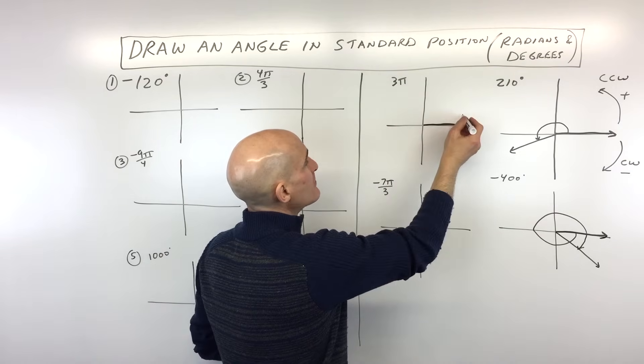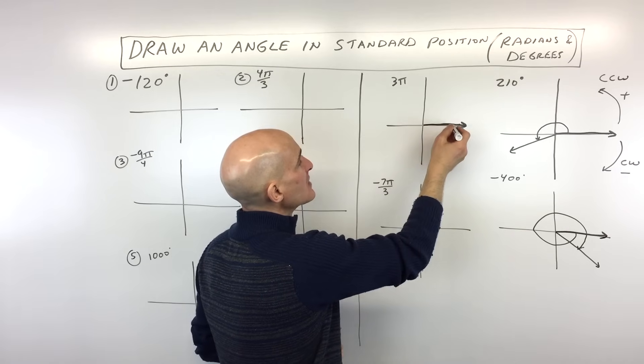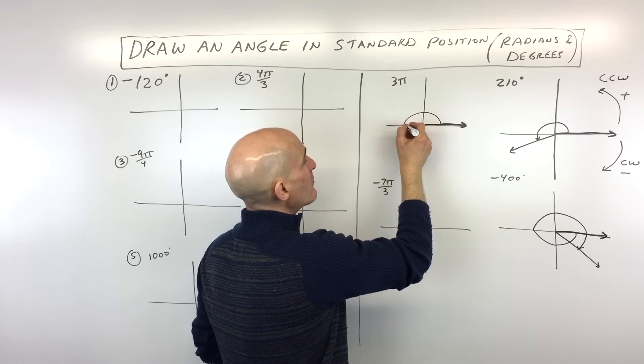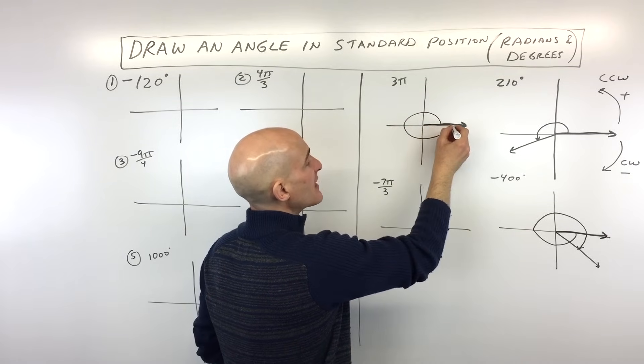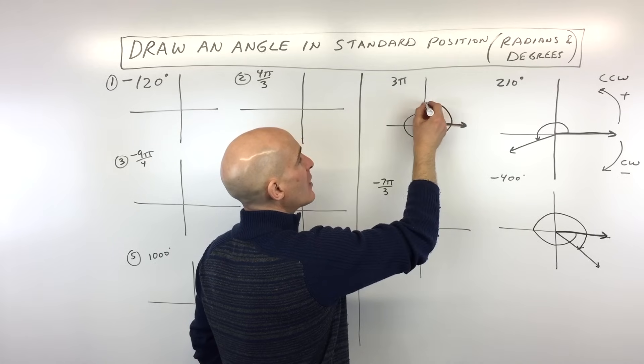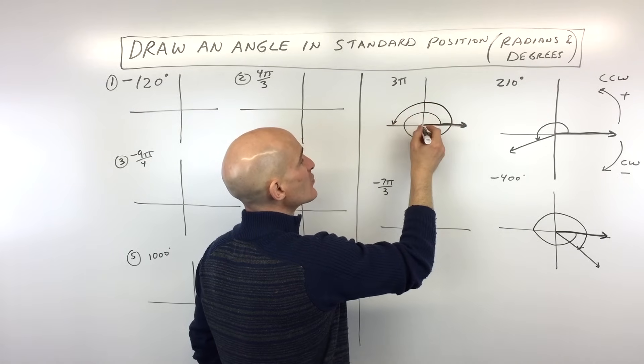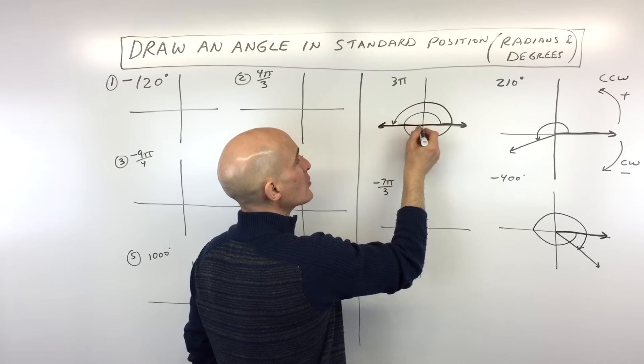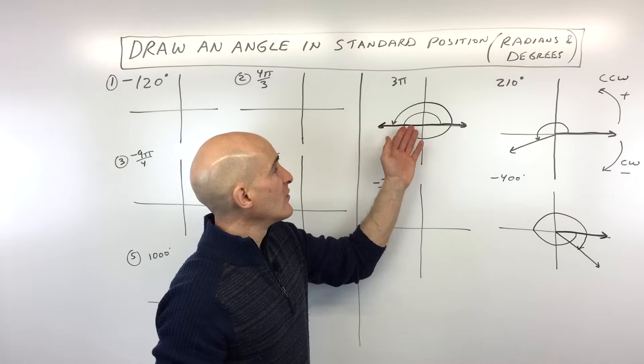So 3 pi, this is positive. So we're going to be heading counterclockwise. 180, that's 1 pi. 360, that's 2 pi. And another 180, that's another pi. That gives us 3 pi. So that's going to be our terminal ray where it terminates or ends. And we've drawn our angle.